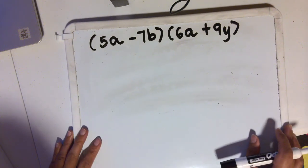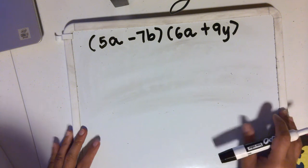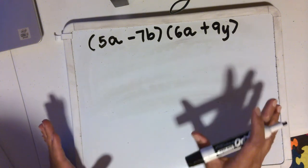In this video, I'm going to show you how to multiply a binomial by another binomial. In this case, we are going to apply the FOIL method.